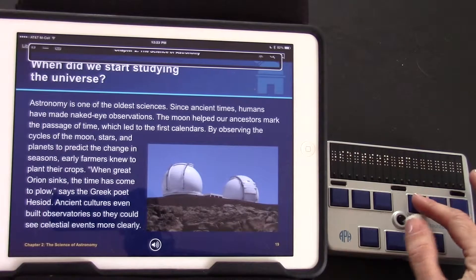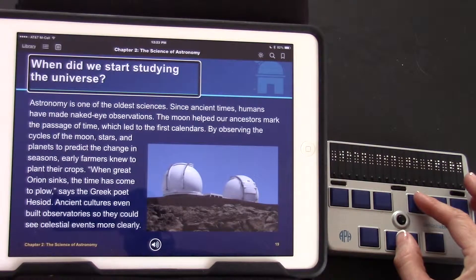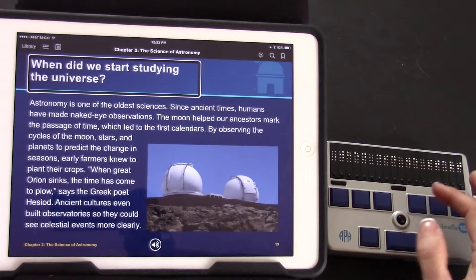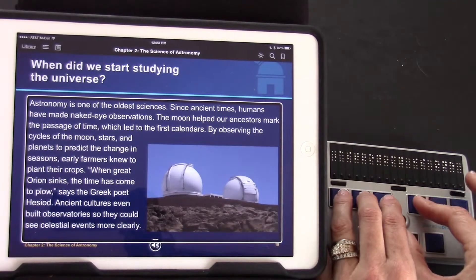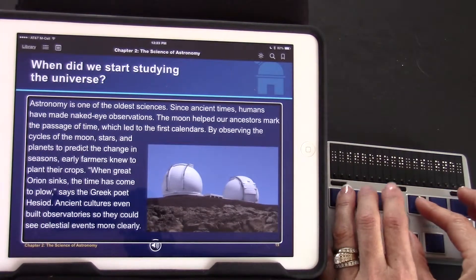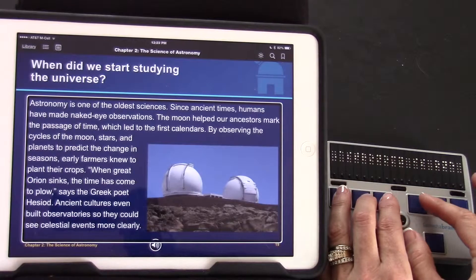For this activity it does not matter which page you use or what book you use. I'm going to move to the text using four space. When did we start studying the universe? Astronomy is one of the oldest sciences since ancient times humans. I paused with P chord one two three four space.